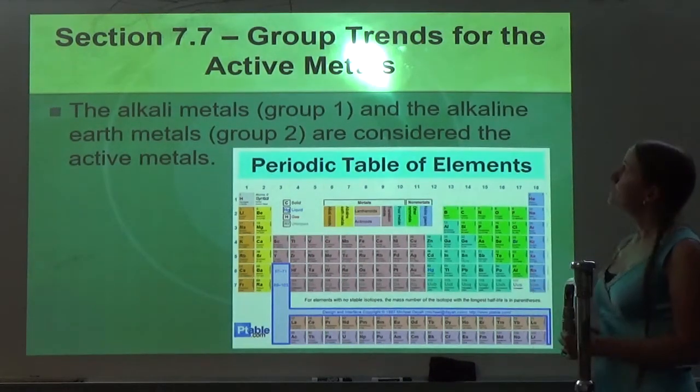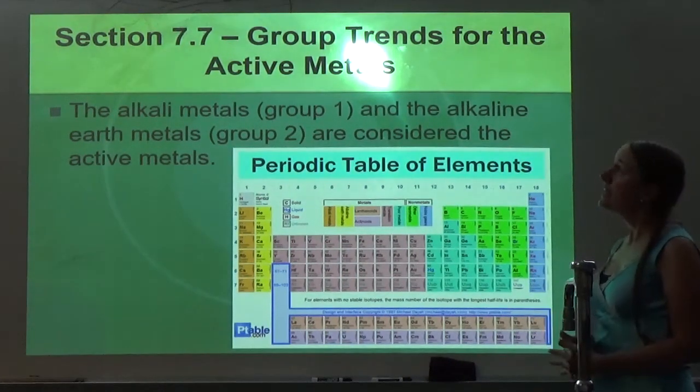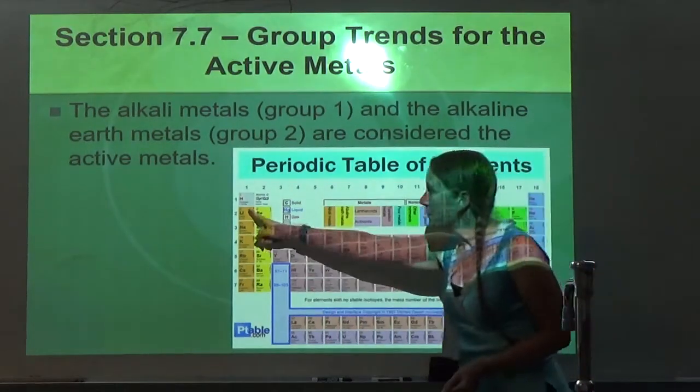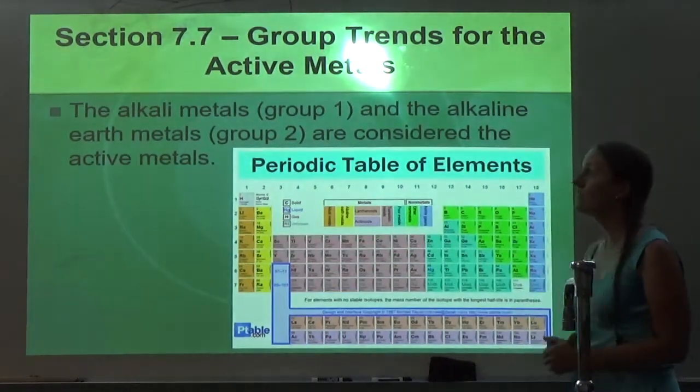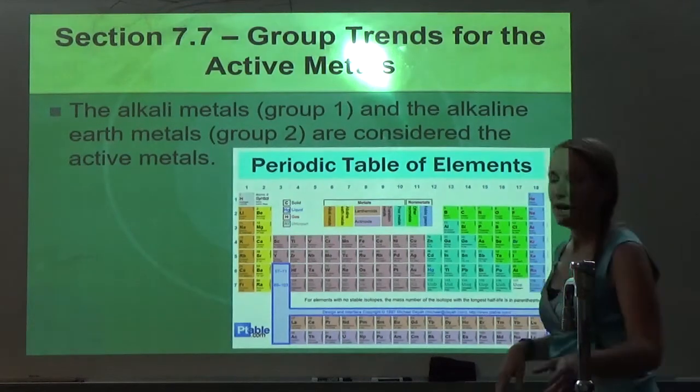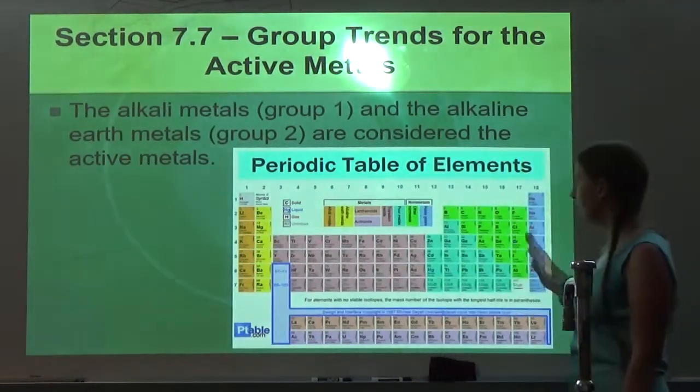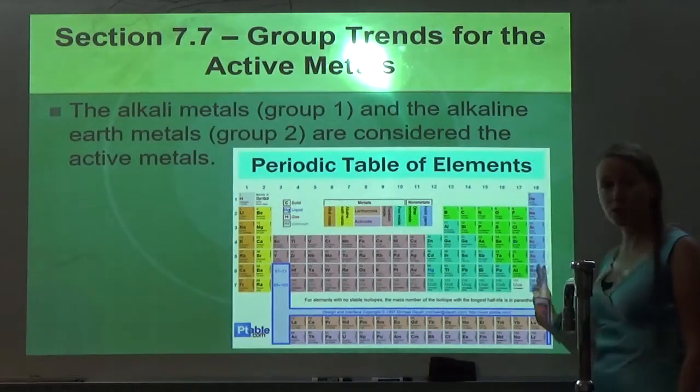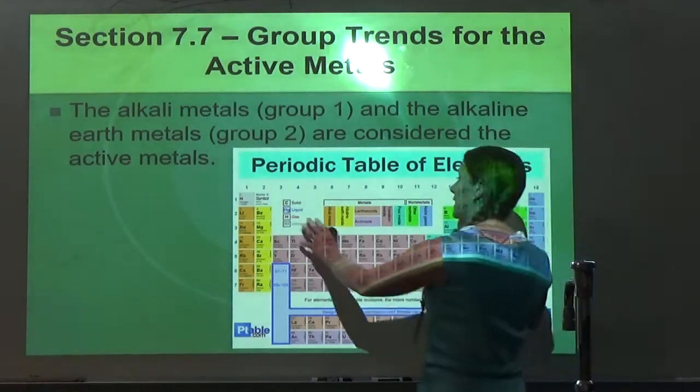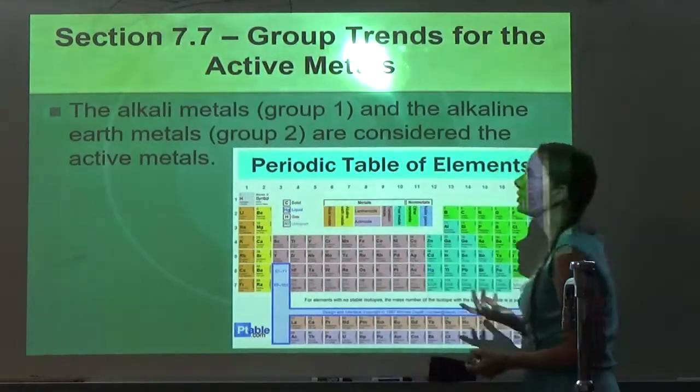So 7.7 is group trends for the active metals. The alkali metals, which are Group 1, and the alkaline earth metals, which are Group 2, are considered the active metals. As you go towards the left and right of the periodic table, except for the noble gases, reactivity increases. That's why they're called the active metals.